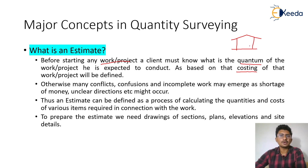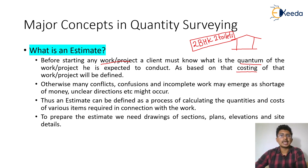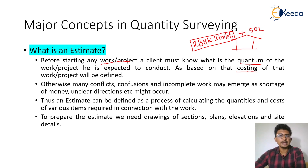I have decided to construct a house and I need to know what exactly the quantum of that house is going to be. In simple words, I want to construct a two-bedroom hall kitchen house with two toilets, one four-wheeler parking, two two-wheeler parking slots, and a compound wall around the house. That is the quantum of my work defined. For this, I might need something like 50 lakh rupees.